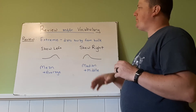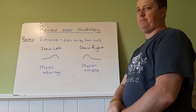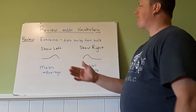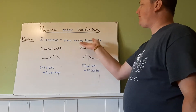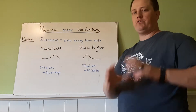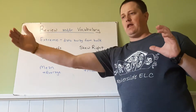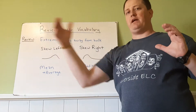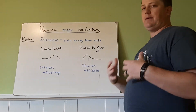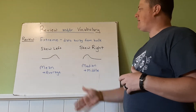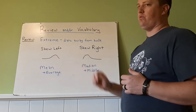So we want to review some basic vocabulary to do this lesson. First, extreme. An extreme is just data away from the bulk. So, we have a bulk of data here and a number way over here — this would be considered an extreme.